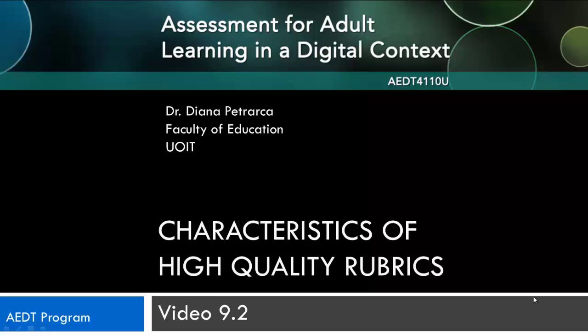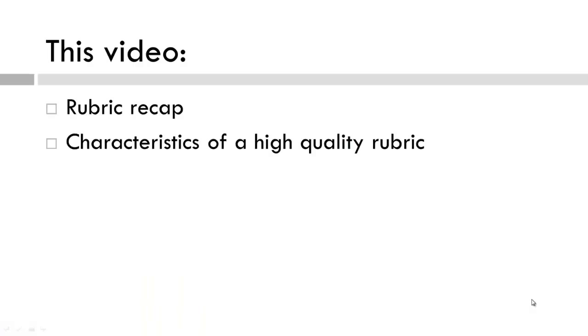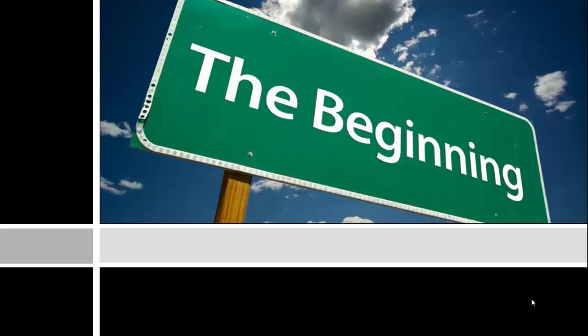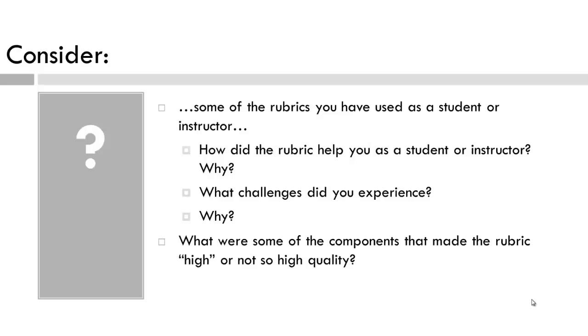Welcome to video 9.2 for the UOIT AEDT program's Adult Learning in a Digital Context course. In this video, we will examine characteristics to consider when examining the quality of a rubric. Before we begin, take a moment to consider these questions and perhaps jot down some initial reactions.